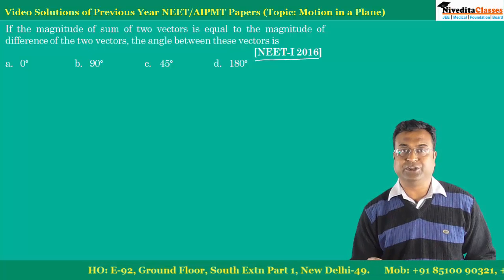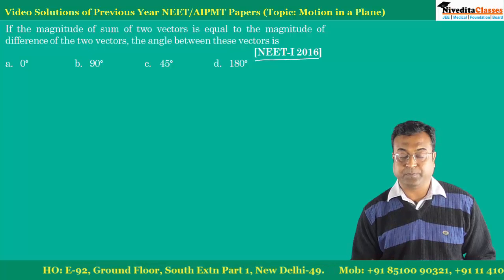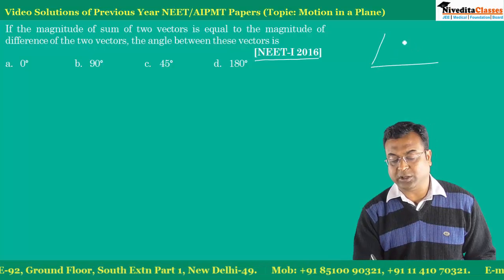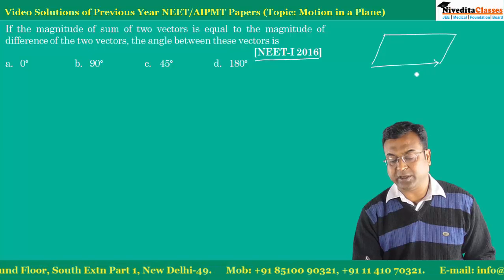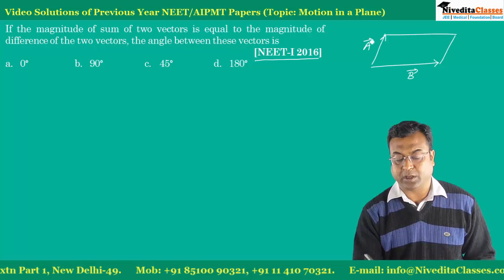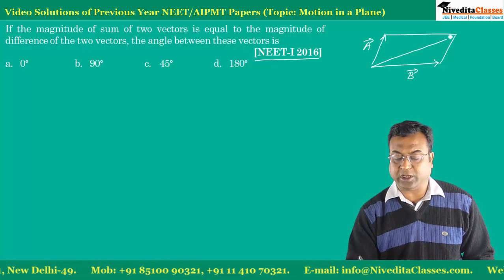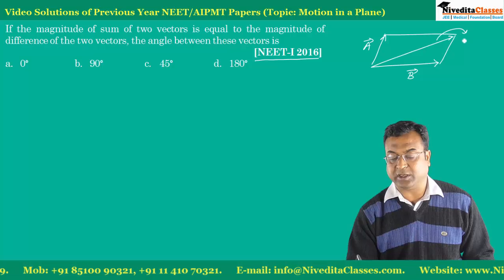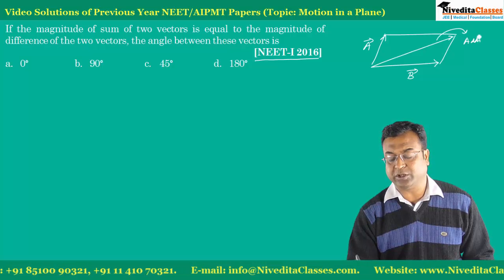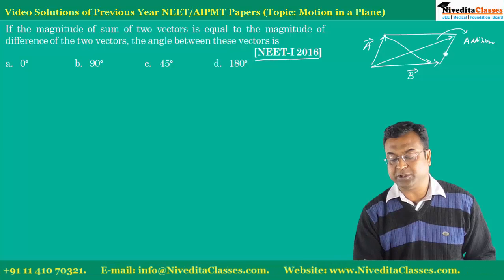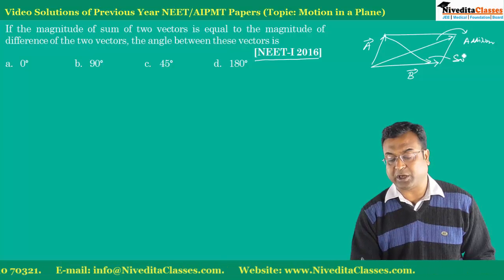Remember the parallelogram law. In a parallelogram, let's say this is my vector B and this is my vector A. One diagonal represents the addition of the two vectors, and the other diagonal represents the subtraction of the two vectors.